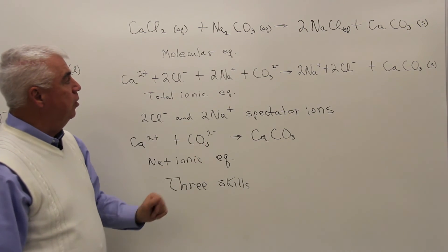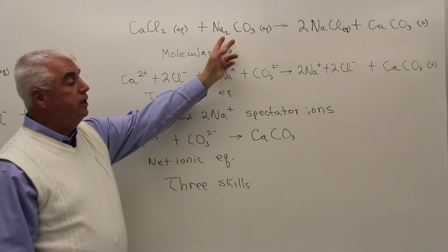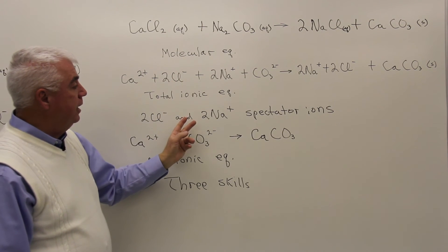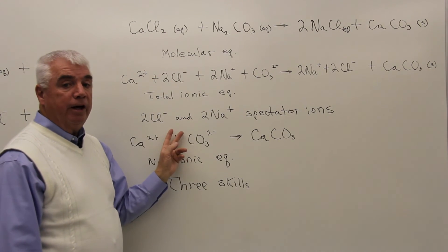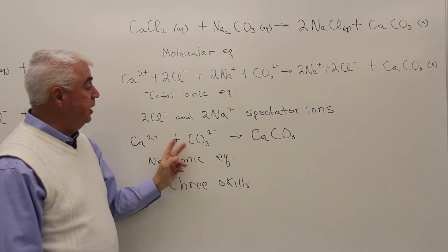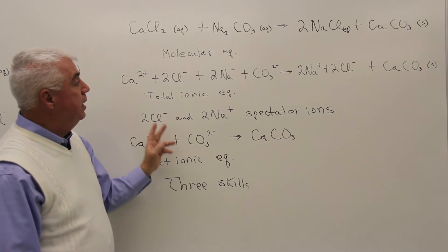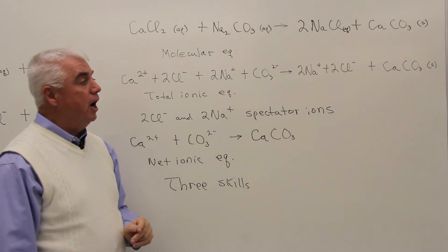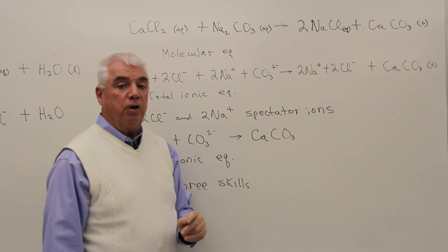Of these three skills, you'll always be given the molecular equation, and once you've got the total ionic, I think it's pretty easy to identify the spectator ions, and then to subtract the spectator ions to get the net ionic equation. Maybe the toughest skill is breaking things apart into ions. Let's practice that just a little bit.